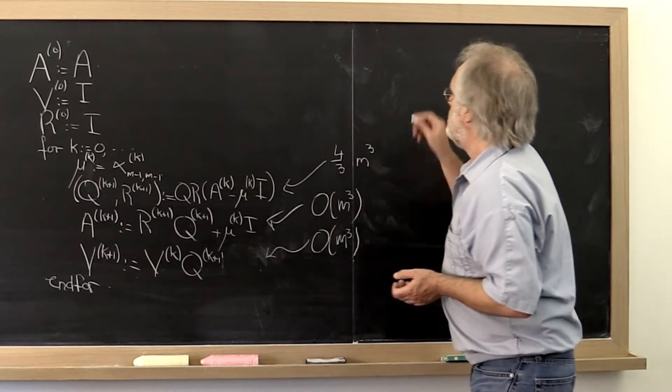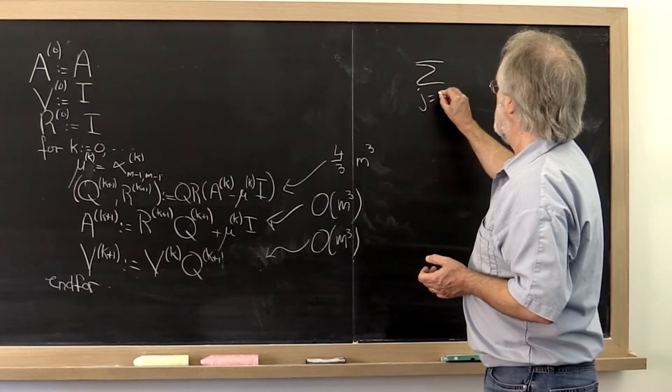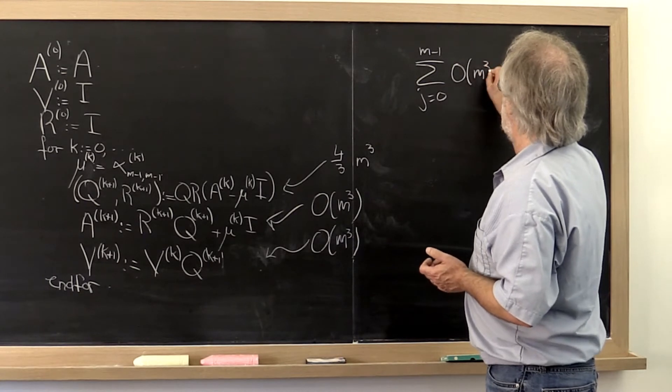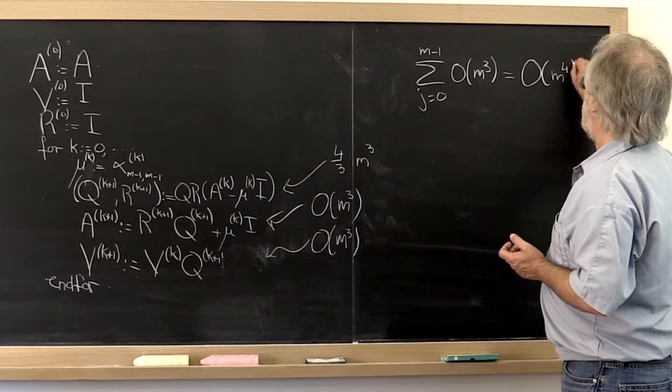But what that really means is that we have some kind of sum from j equals 0 to m minus 1 of something that's order m cubed. And that is order m to the fourth.